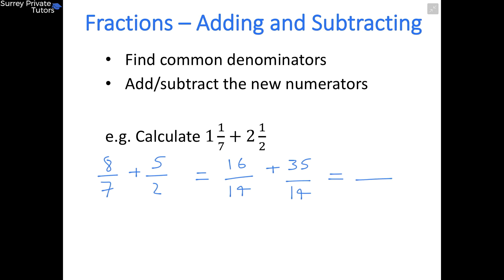Now to get our final answer, you can keep the bottom as just 14, and all you have to do is add your two numerators. So 16 plus 35, that gives you 51. They might ask you to give your answer as a mixed number, so it just sort of depends on the question, but here we can leave our final answer as an improper fraction.